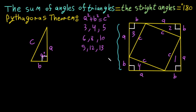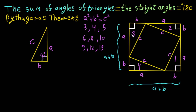The length of each side of the big square is a + b. So we have a large square with side length a + b, with four triangles arranged along its frame, and a shape in the middle.